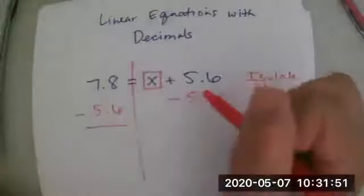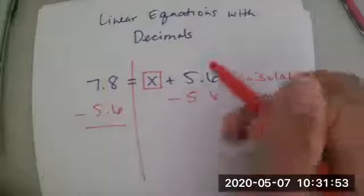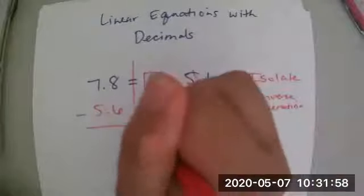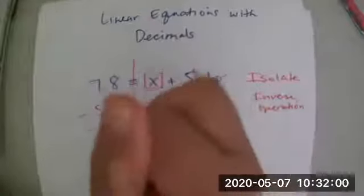So on this side, I have positive 5.6 and negative 5.6, which actually they cancel each other out because of 0. So that's gone. So now we're just left with x on this side, which is what x wants, right?